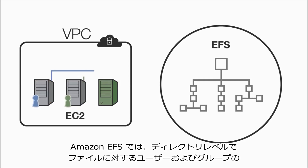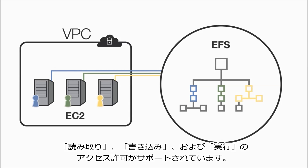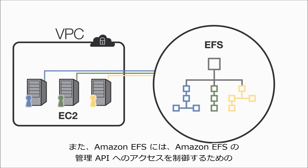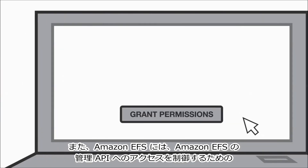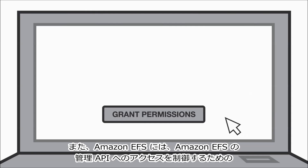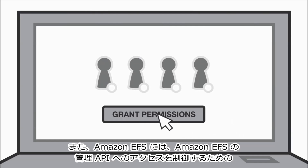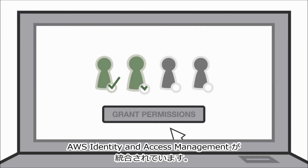At the file and directory level, Amazon EFS supports user and group read, write, and execute permissions. Amazon EFS is integrated with AWS Identity and Access Management to control access to Amazon EFS's administrative API.